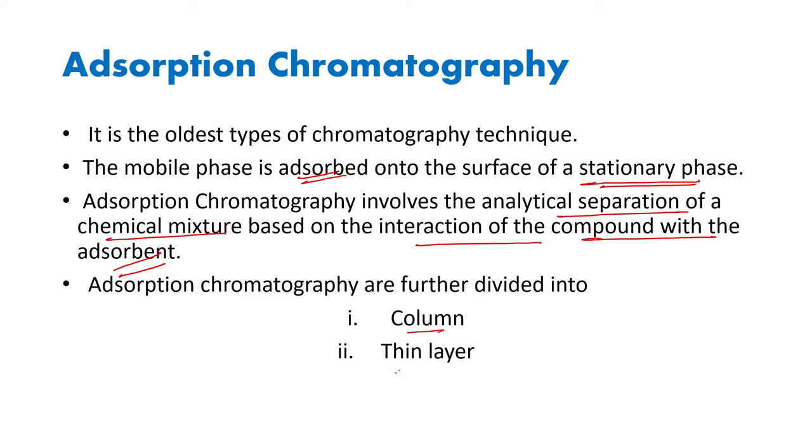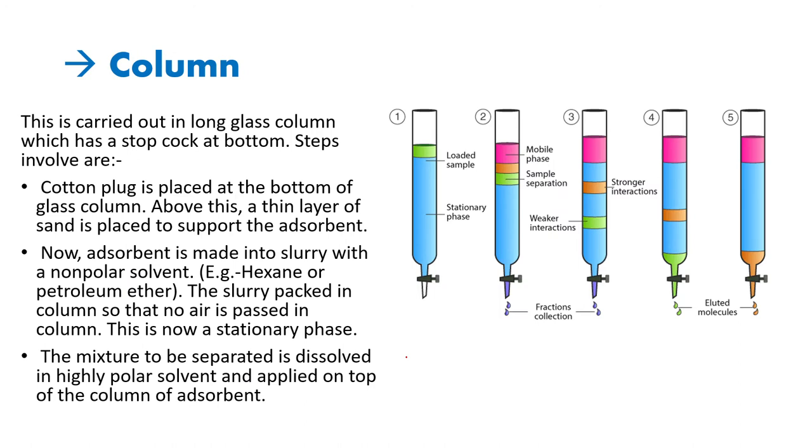In column chromatography, we have a glass column. At its bottom, we fix a cotton plug. Above this, we place a thin layer of sand. Above the sand, we place an adsorbent, a stationary phase, a non-polar solvent, and on top of that, we place our organic compound. Both the organic compound and the adsorbent are in the stationary phase. To make them move into the mobile phase, we add a solvent. That solvent is in the mobile phase.